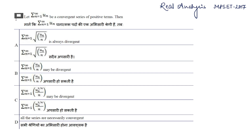Namaskar, we are discussing MPSet 2017 paper in which we are solving real analysis. The question is: let uₙ be a convergent series with positive terms where each uₙ is greater than 0.